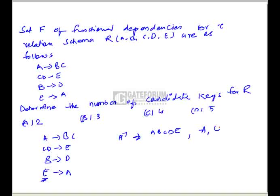Let us find the closure of B. B closure gives BD — from B we get D. From BD, we cannot derive anything further, so we cannot take B as a candidate key.